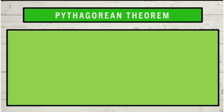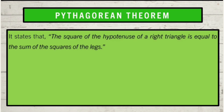The Pythagorean theorem states that the square of the hypotenuse of a right triangle is equal to the sum of the squares of the legs.